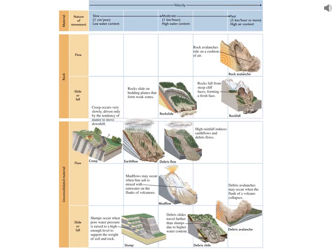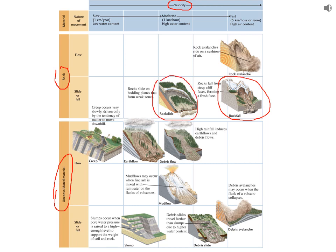We classify mass wasting events based on two things: the velocity — the speed at which material is moving downslope — and what kind of material you have, whether it's rock or soil or unconsolidated material. If rock is moving really fast off a cliff, we have a rock fall. If it's sliding downslope, we have a rock slide. If you have unconsolidated material like soil that gets saturated, we call that an earth flow. If we have a lot more water with big chunks of rock, we call that a debris flow. We also have slumps and debris slides.